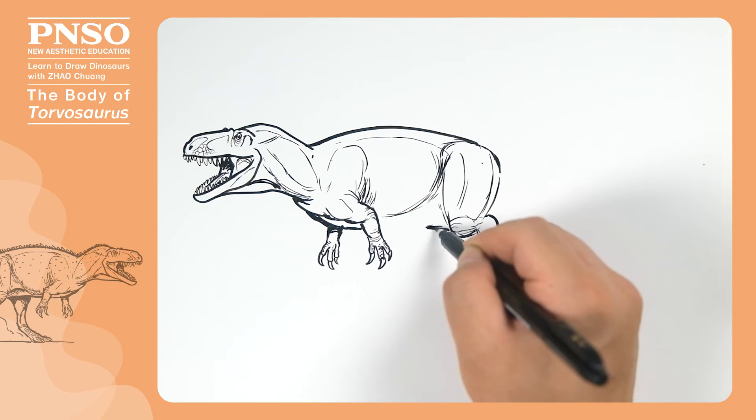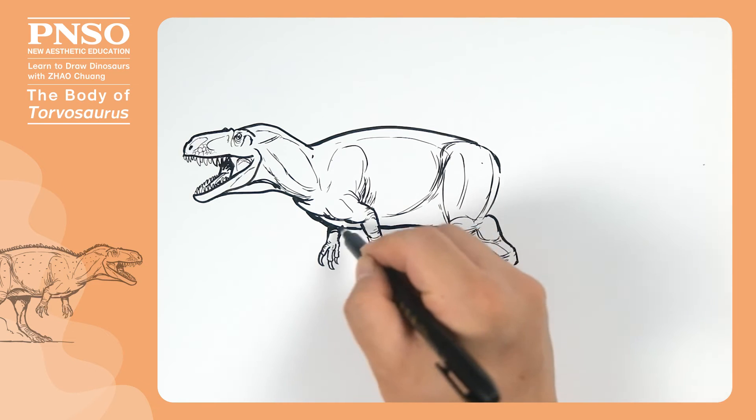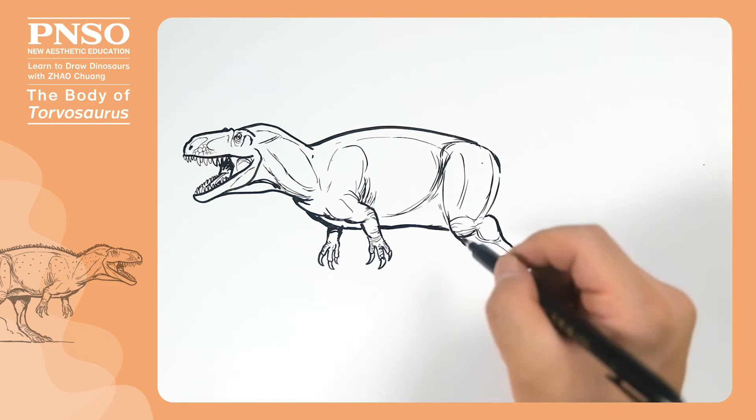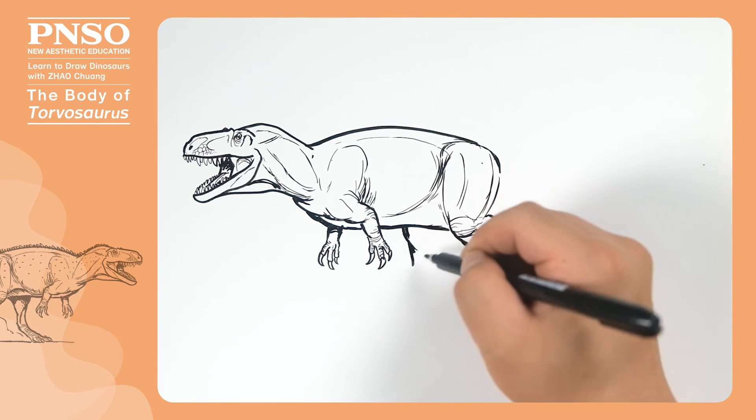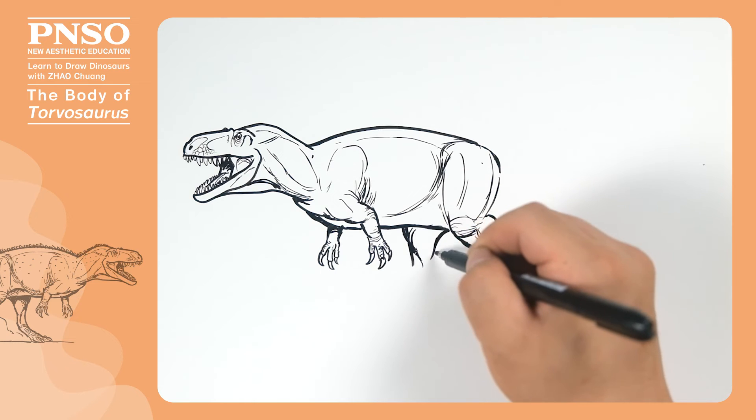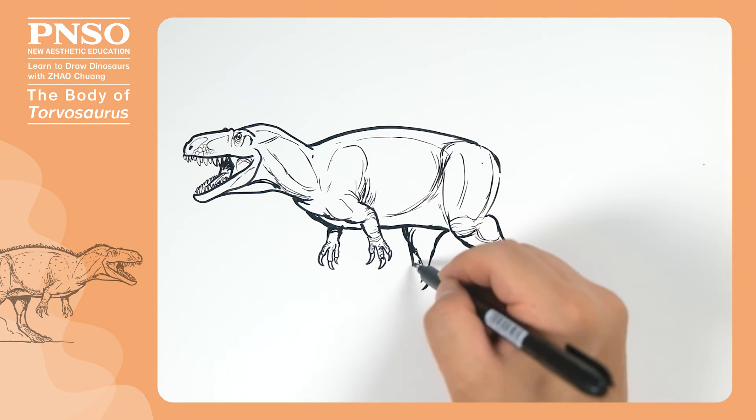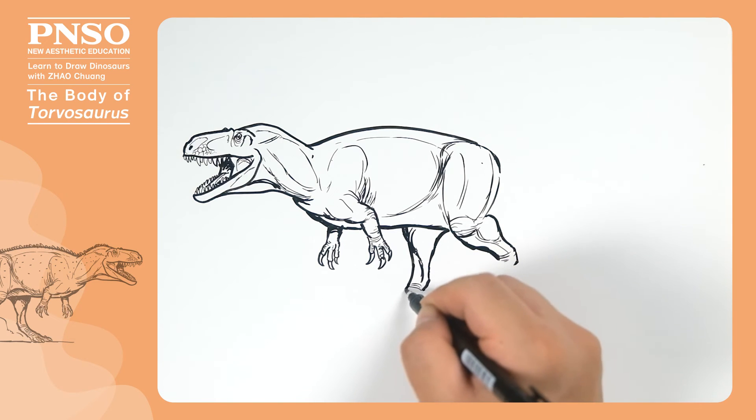Its pubic bone wasn't long, which would probably reach here, so its belly looked flat. Then draw the other leg. The upper part of this leg was blocked, so just draw the lower leg. The calf muscles extended to the ankle. Then move on to the sole of the foot.